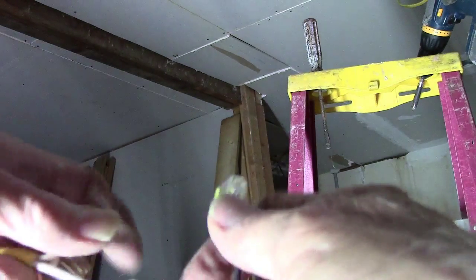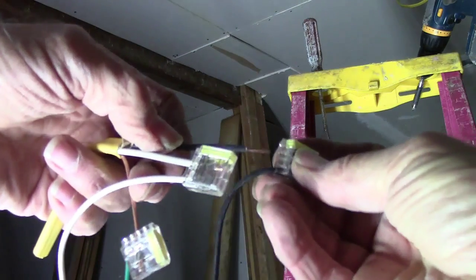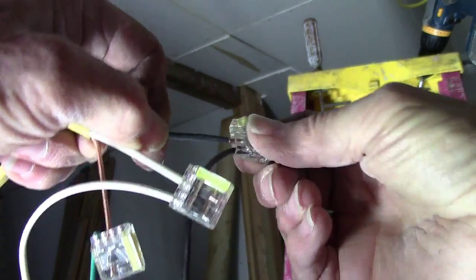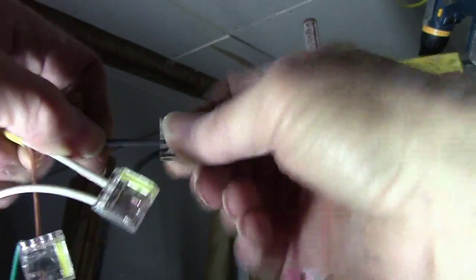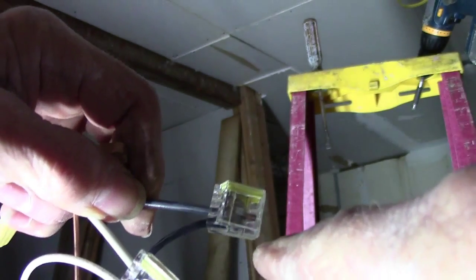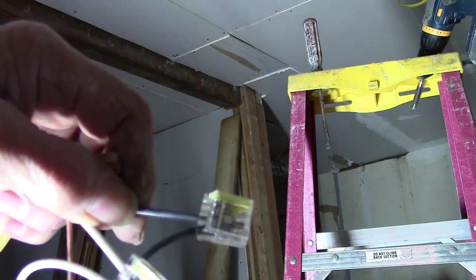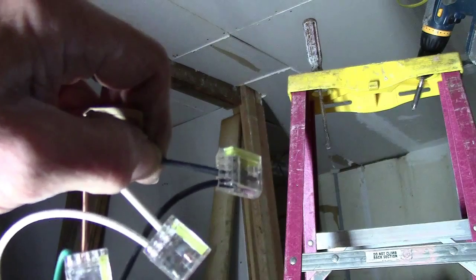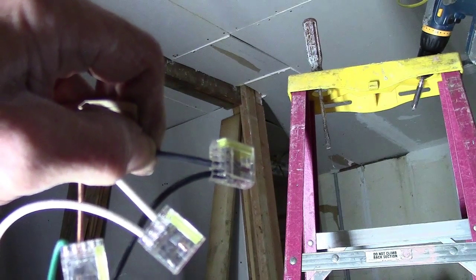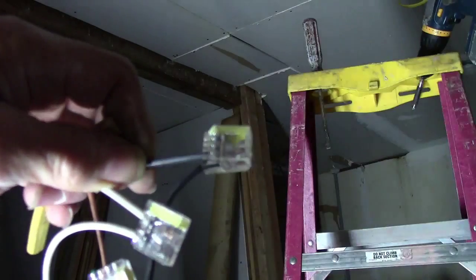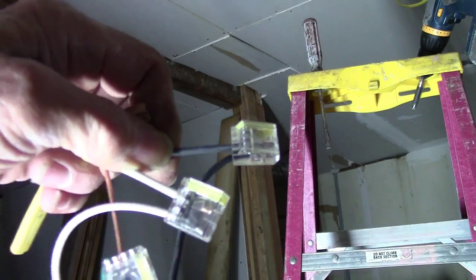And then you've got your black wire. Same thing. Push it in, twist it around as you push it in. And you can see your wires all the way in there. No bare wire coming out past your lock nut, your connector. No bare wires coming past your connector, and you're ready to go.